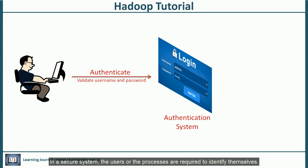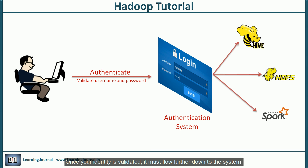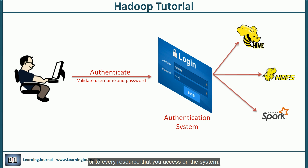In a secure system, users or processes are required to identify themselves. Then the system needs to validate the identity — it must ensure that you are the one who you claim to be. But authentication doesn't end there. Once your identity is validated, it must flow further down to the system. Your identity must propagate with your every action or to every resource that you access on the system.